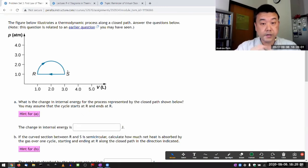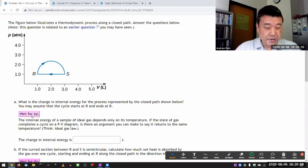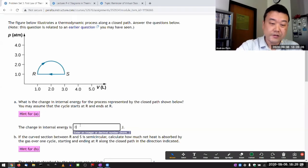Because it's illustrated, we can analyze it. Part A asks, what is the change in internal energy for the process represented by the closed path shown below? You may have some cycle starts at R and ends at R. That actually has a very quick answer. The change in internal energy is actually zero.